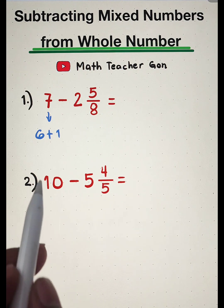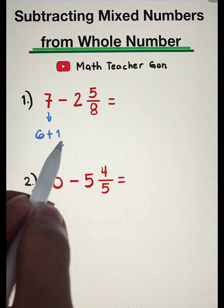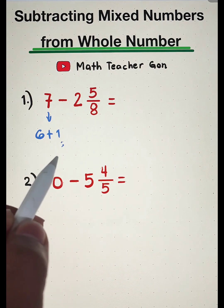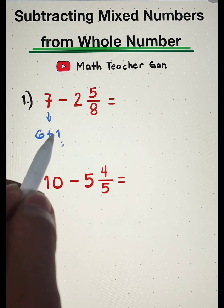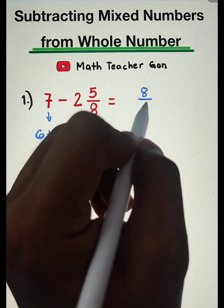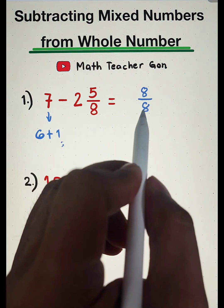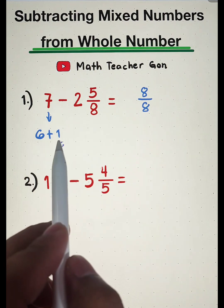So what will happen here? This one will serve as a fraction. We will convert this whole number 1 into a fraction. So remember, if we're going to convert this into 8 over 8, 8 over 8 is the same as 1 because 8 divided by 8 is 1.